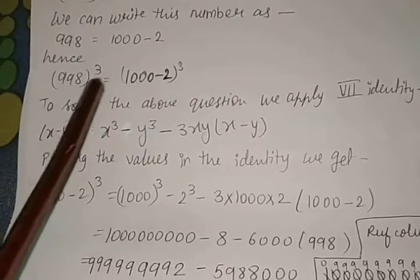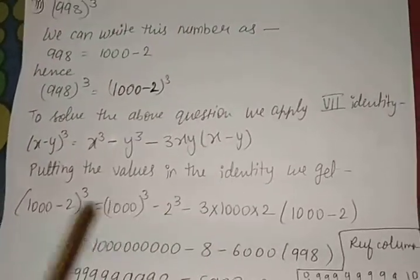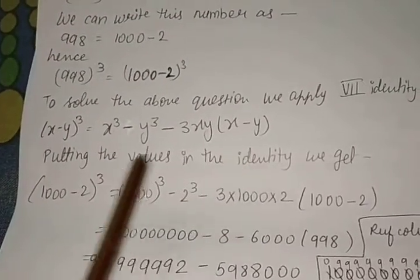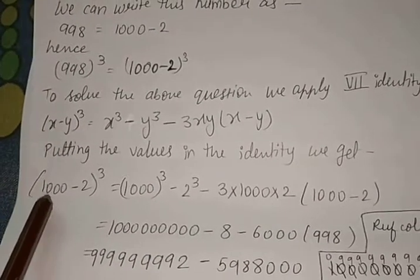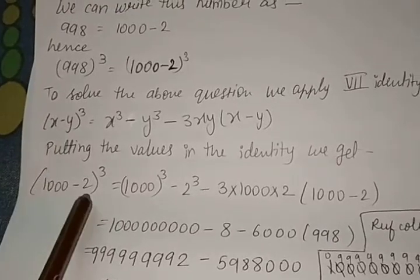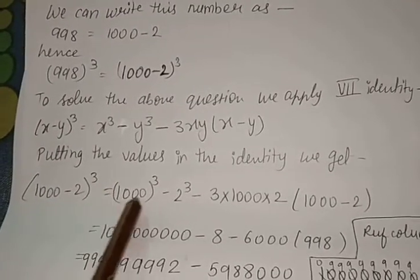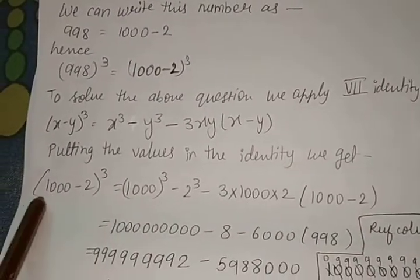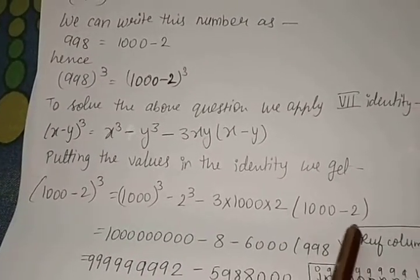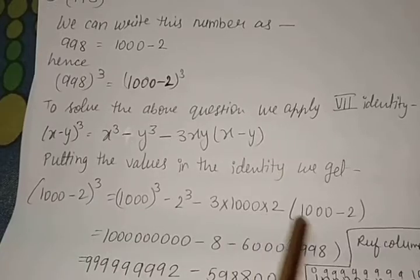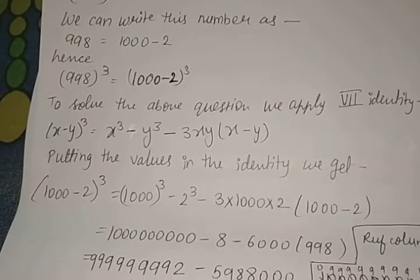So this is our identity and we just put the values in our identity. At the place of x we put 1000, at the place of y we put 2. This is the values which you find after comparing.